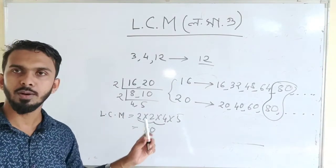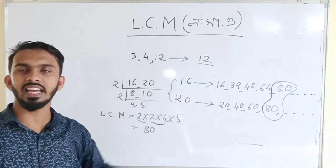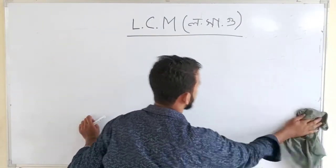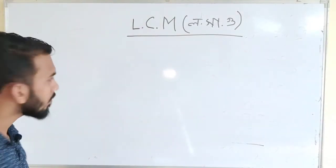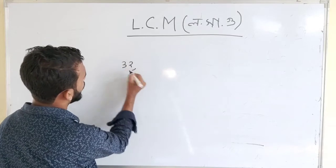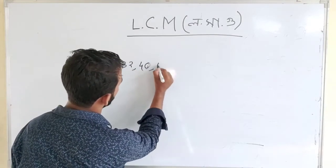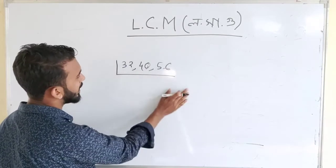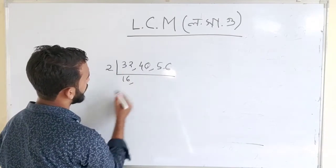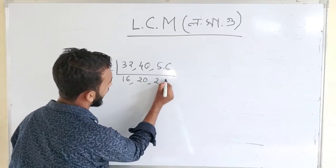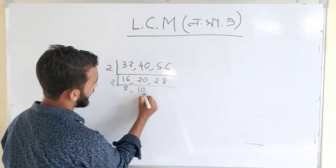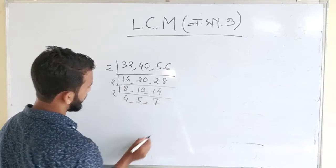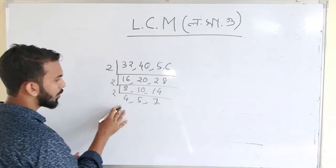We have to use the division method to find the LCM. To divide: 2 divides 16 and 20, giving 8 and 10. Again 2 divides giving 4 and 5. Now 2 gives 1, 1 with 5 and 7 remaining. We get: 2 into 2 into 2 into 4 into 5 into 7.